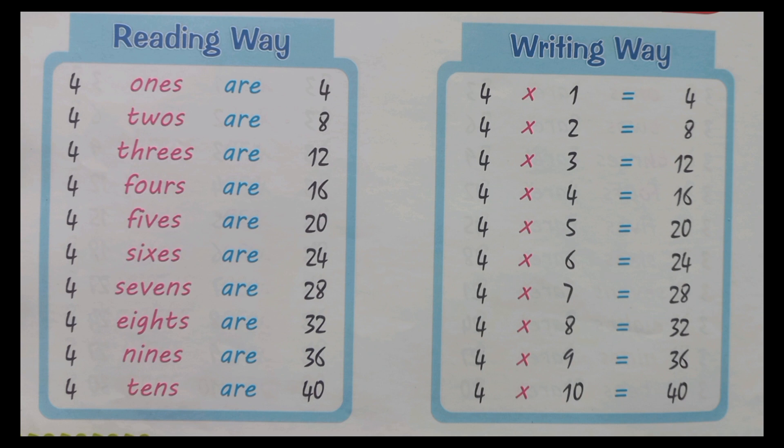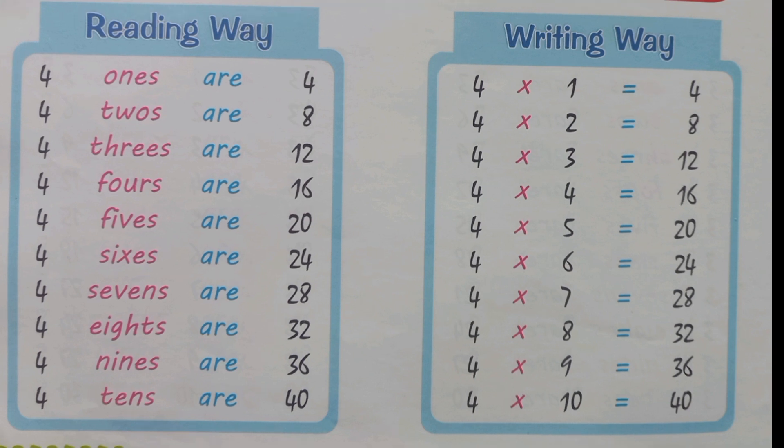Four, six's a twenty-four. Four, seven's a twenty-eight. Four, eight's a thirty-two. Four, nine's a thirty-six. Four, ten's a forty.